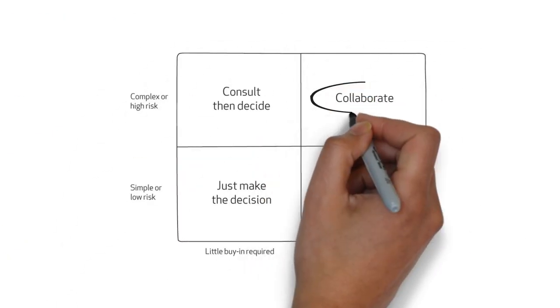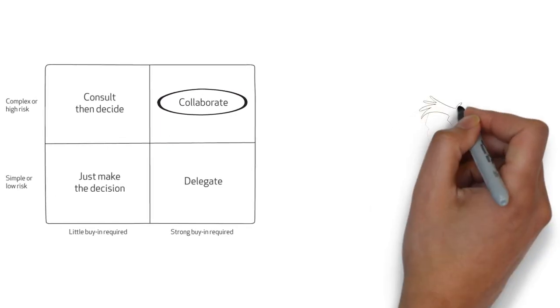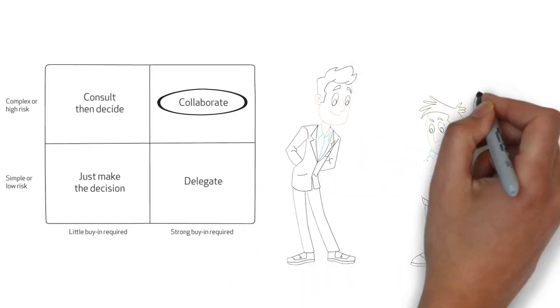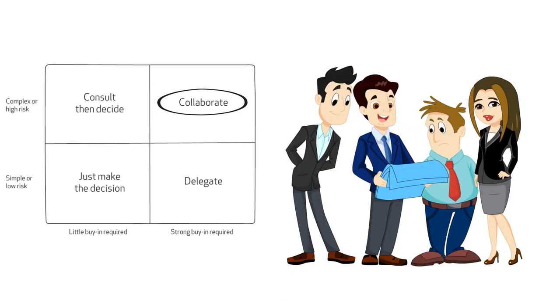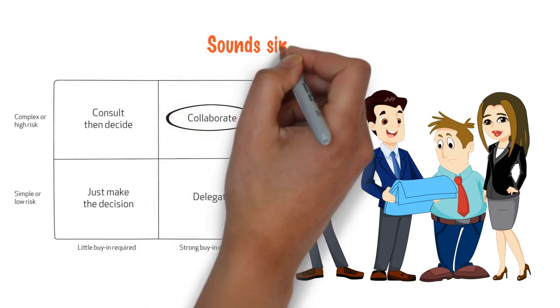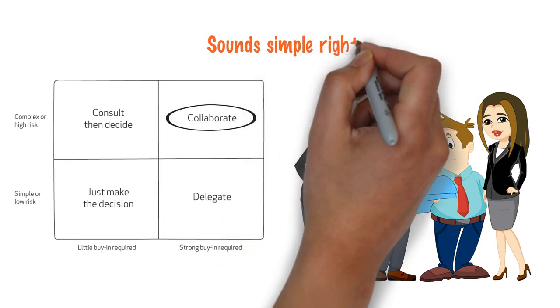The decisions that are the most important fall into the top right quadrant. And these are the ones you want to spend most of your time on. Collaborate with people on these ones. It sounds simple, right? And it is in many ways.